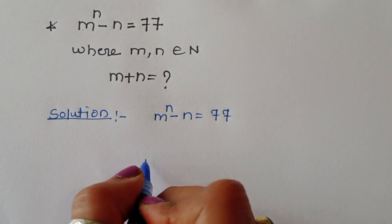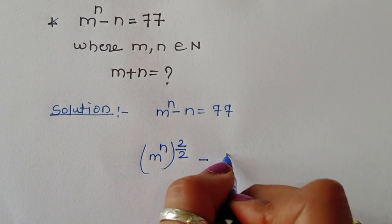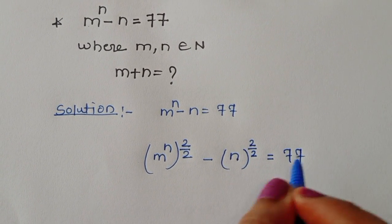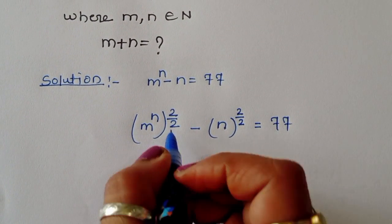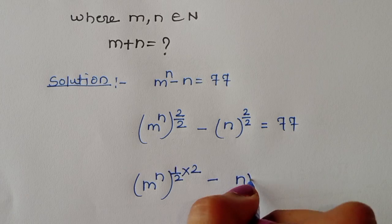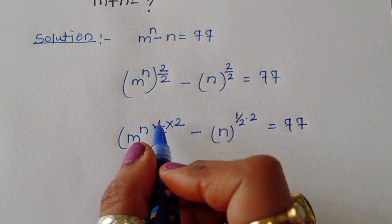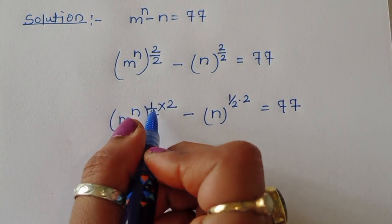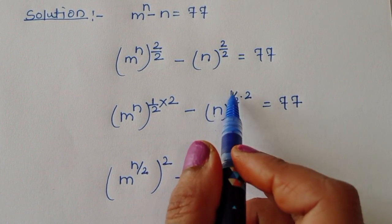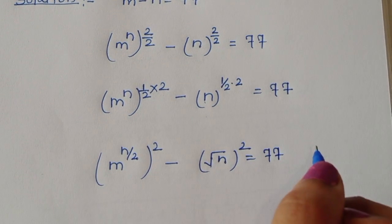We can write this as m power n times (2/2), since 2/2 equals 1, minus n times (2/2) equals 77. Now m power n can be written as (1/2 times 2), and n can be written as n power (1/2) times 2. So we get m power (n/2) whole squared minus square root of n whole squared equals 77.